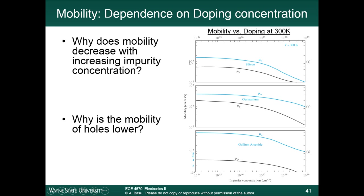We also ended up looking at the dependence on doping concentration. In all three of these materials, the mobility decreases with doping. We have doping density on the x-axis on a log scale, and mobility on the y-axis for silicon, germanium, and gallium arsenide, given in centimeters squared per volt second. At doping densities above roughly 10 to the 16th or 10 to the 17th, impurity scattering starts to become more significant and the mobility starts to drop. Since this is on a log scale, the mobilities can drop by a factor of 10 or more, and this is the case with all three materials.